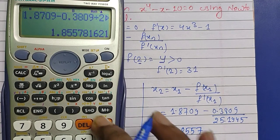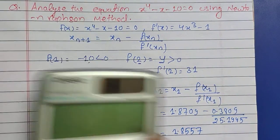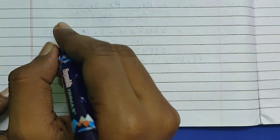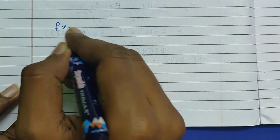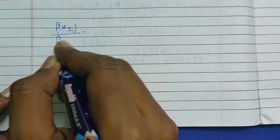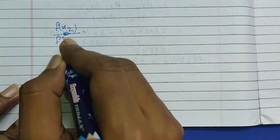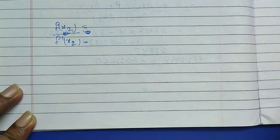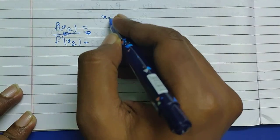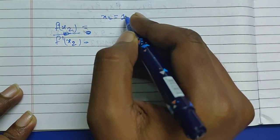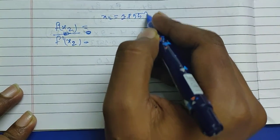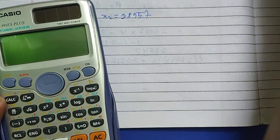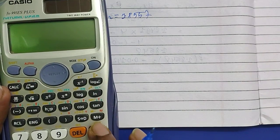Now find the solution. So on solving this, 1.8709 - 0.3809 ÷ 25.1945, and we have got 1.8557. Now go for the x_3.